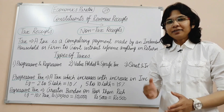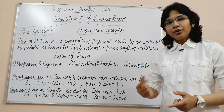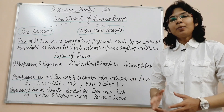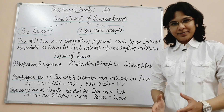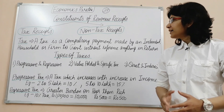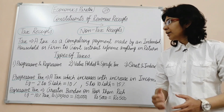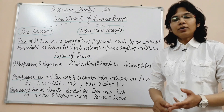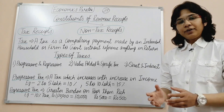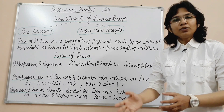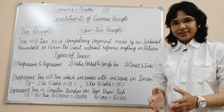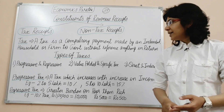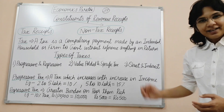Revenue receipts have two constituents: tax receipts and non-tax receipts. A tax is a compulsory payment made by an individual, household, or firm to the government without any expectation of return. There are basically three types of tax: first, progressive and regressive tax; second, value-added tax and specific tax; and third, direct tax and indirect tax.